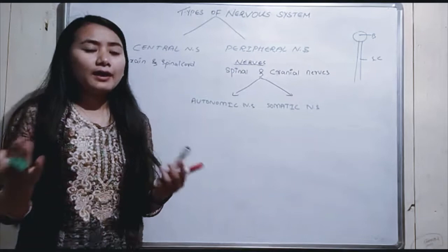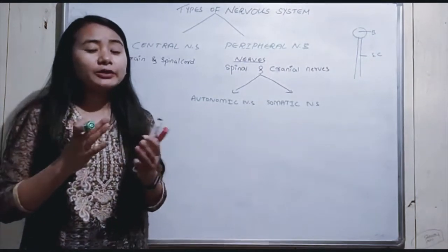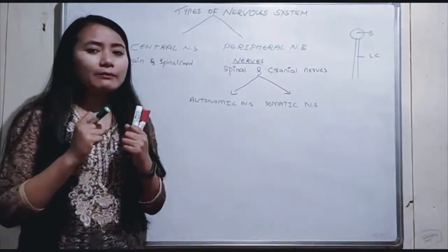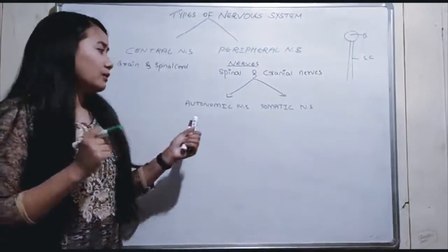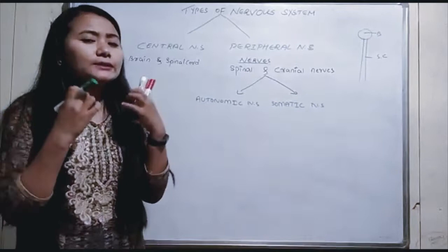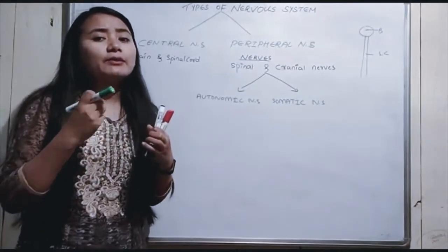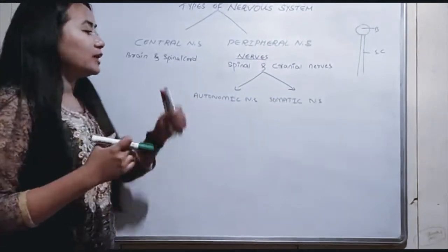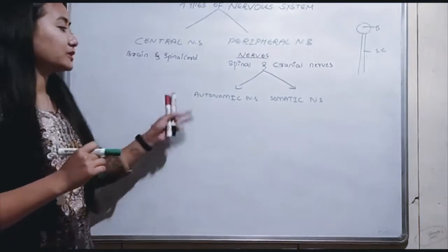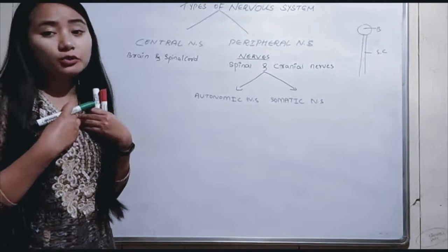The Autonomic Nervous System controls automatic functions like the pumping of the heart, heartbeat, and breathing. These are functions of internal organs that we cannot consciously control — they happen automatically.